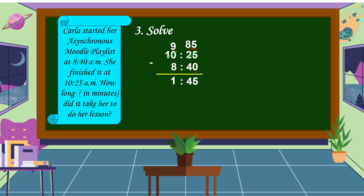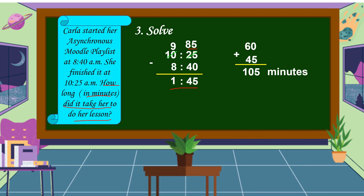Going back to our problem: how long in minutes did it take her to do her lesson? We're going to convert this into minutes. 1 hour is equal to 60 minutes, plus 45 minutes, is equal to 105 minutes. Therefore, she took 105 minutes to do her lesson.